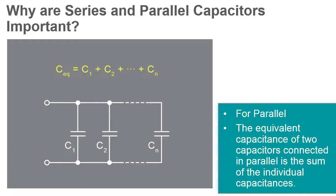For capacitors in parallel, the rule is: the equivalent capacitance of two capacitors connected in parallel is the sum of the individual capacitances.